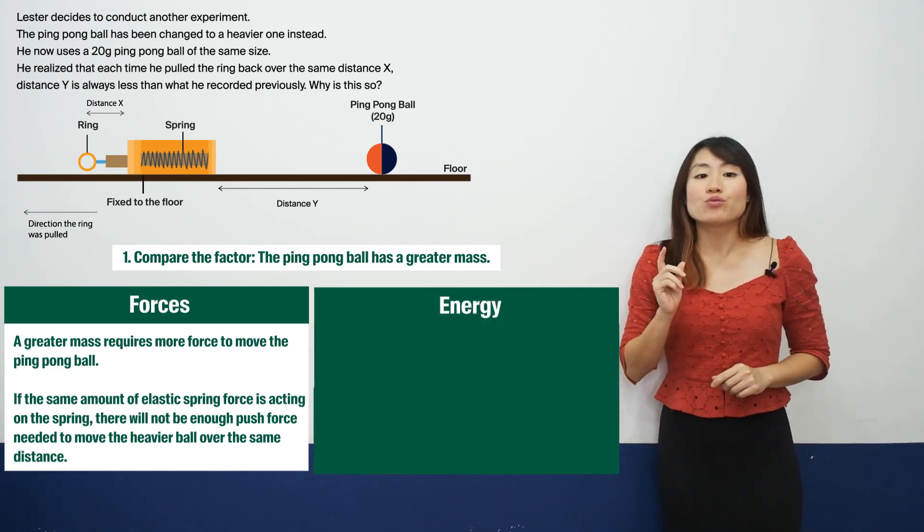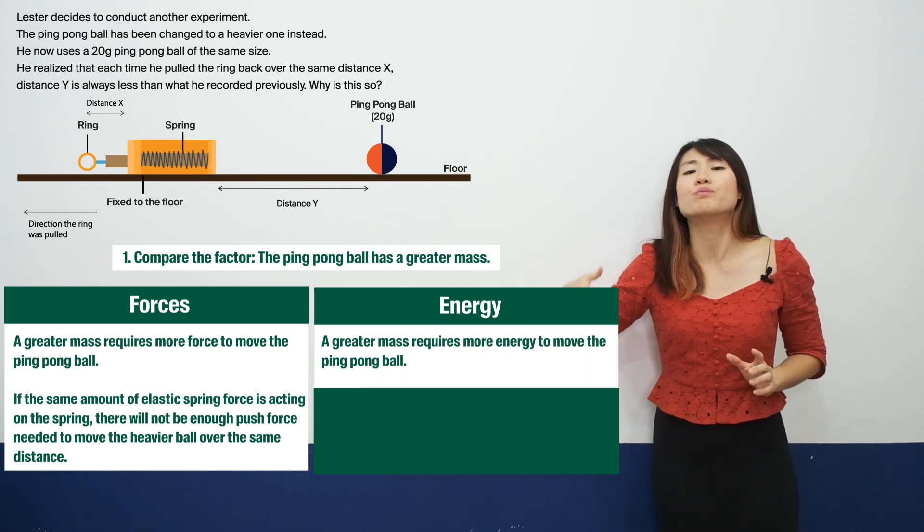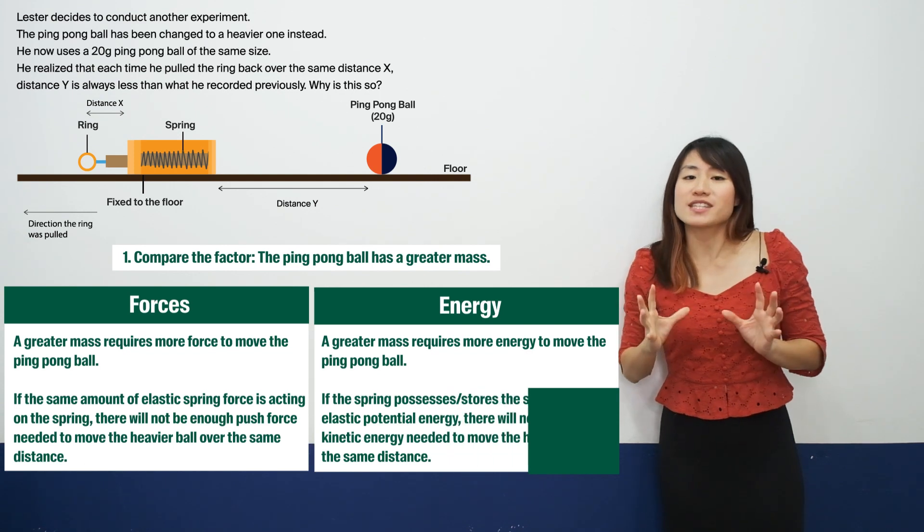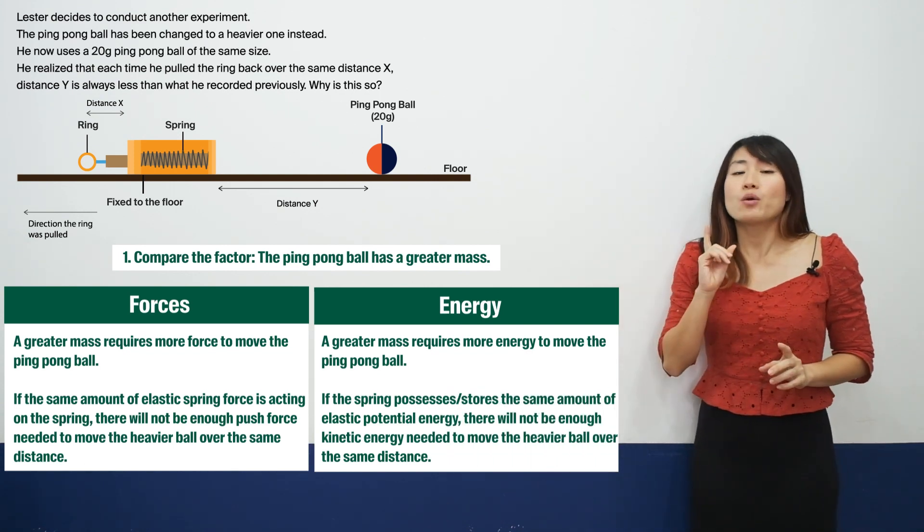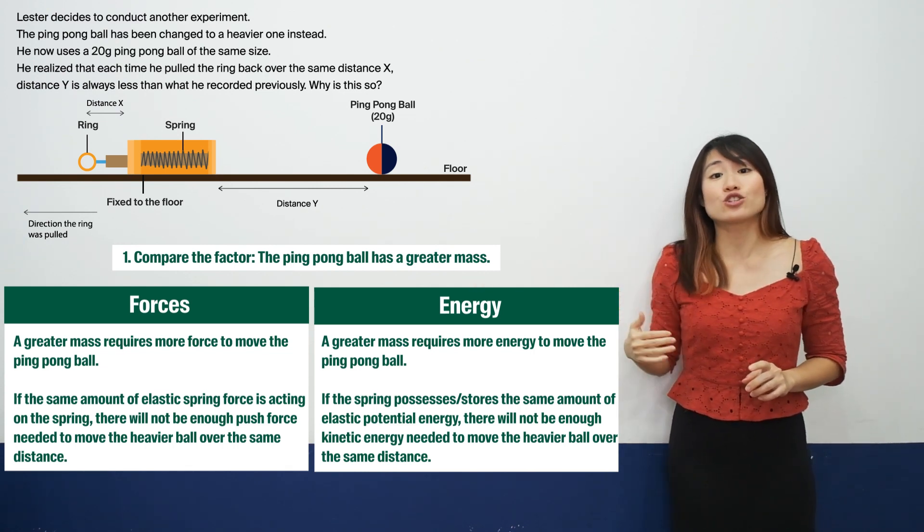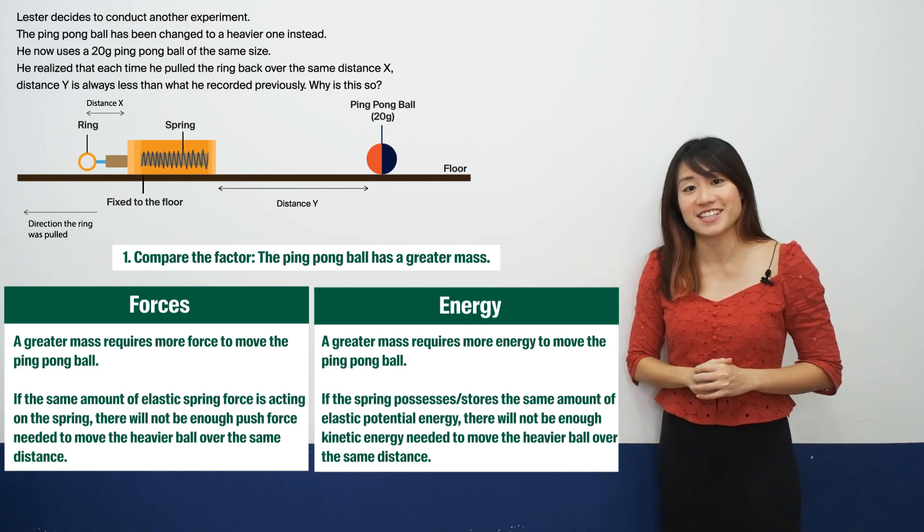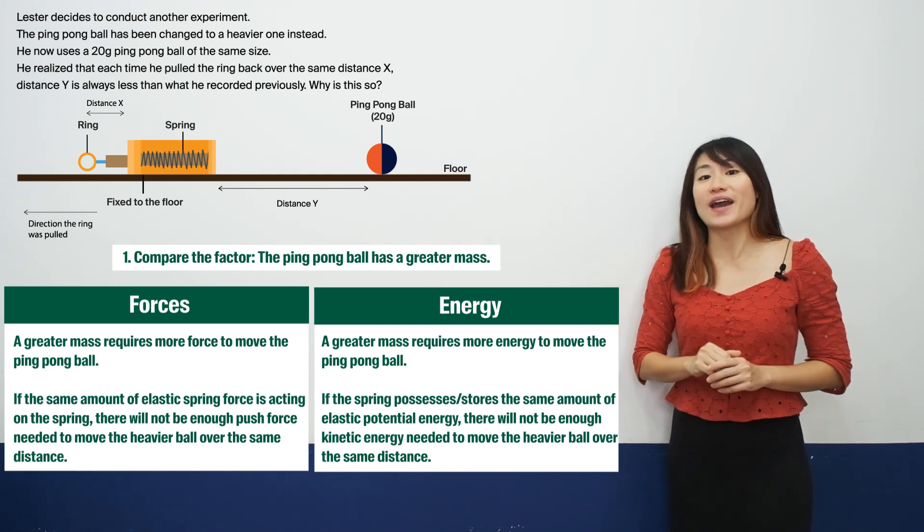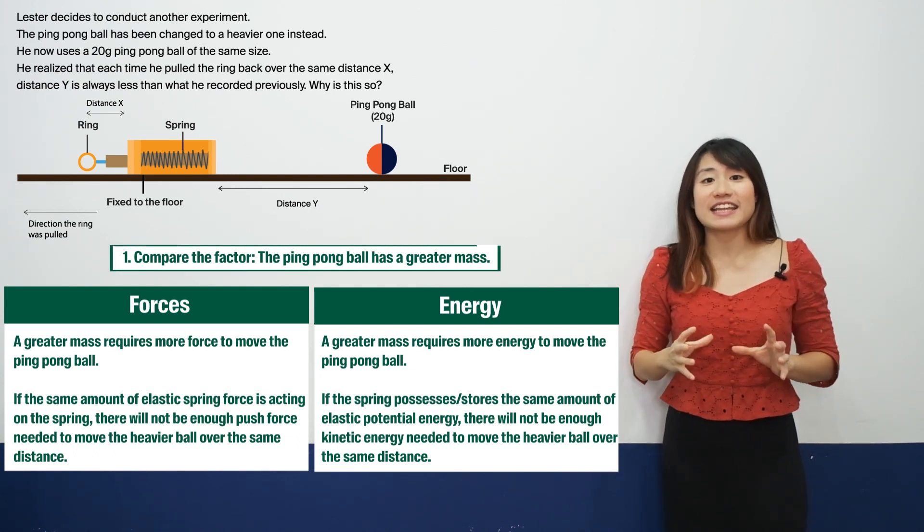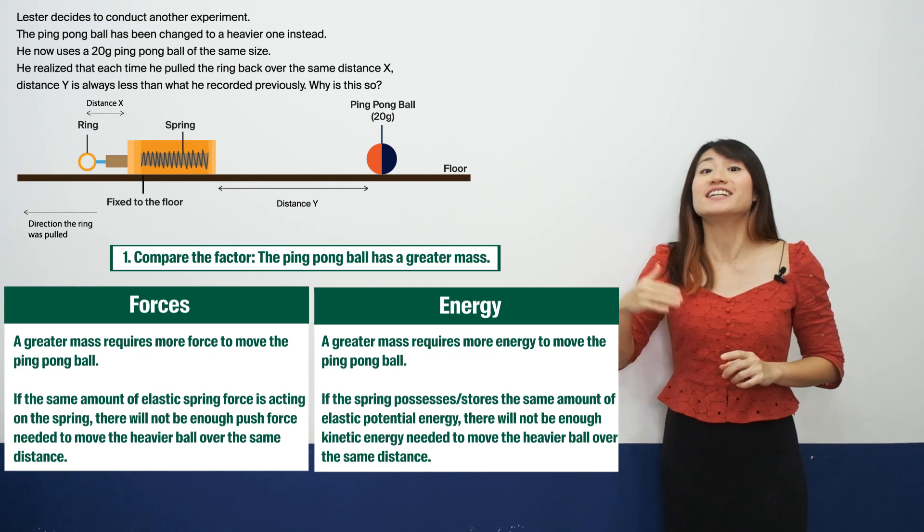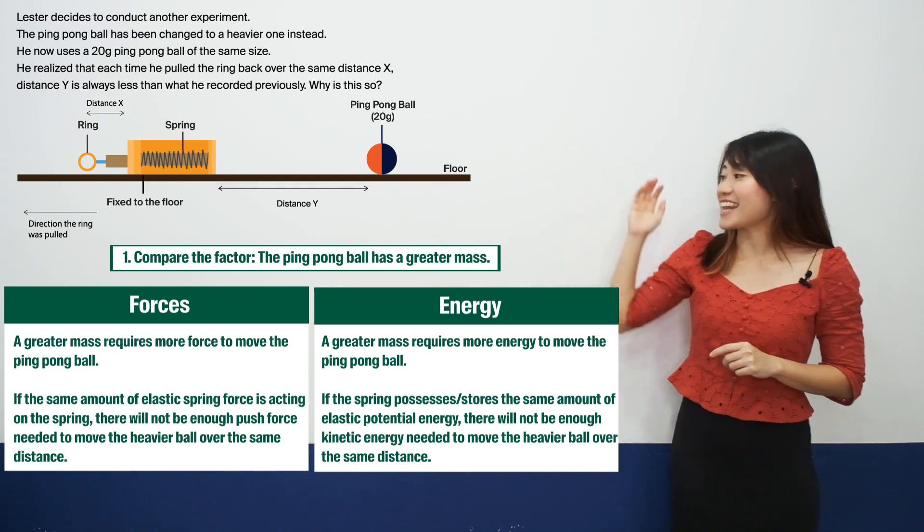As for energy, we can reason that a greater mass requires more energy to move the ping pong ball. So if the spring possesses the same amount of elastic potential energy, there will not be enough kinetic energy needed to move the heavier ping pong ball over the same distance. Of course, don't forget to add the first step, which is compare the factor. So you have to first state that the ping pong ball now has a larger mass. So these are the final answers for forces and energy.